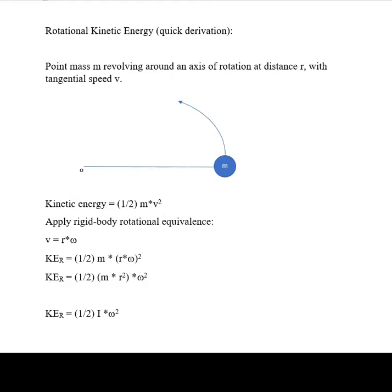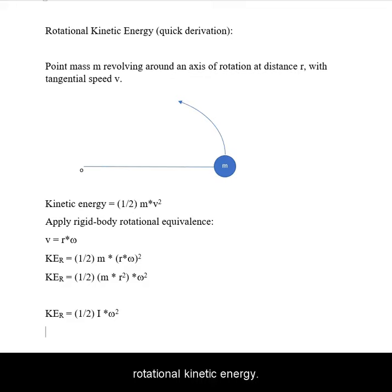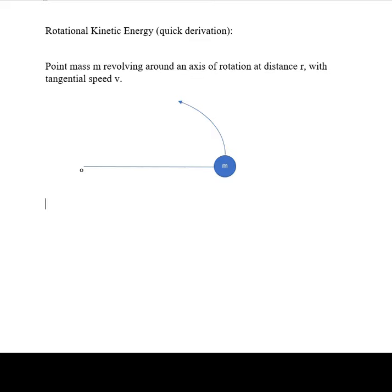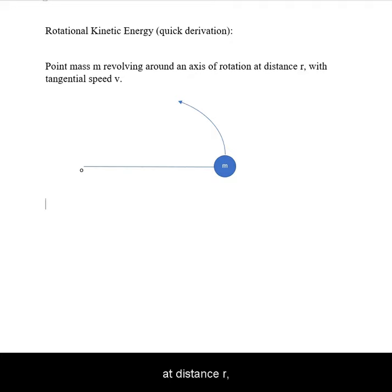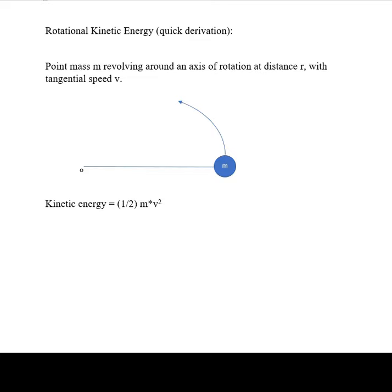This video will demonstrate the quick derivation for rotational kinetic energy. Take a point mass revolving around some axis of rotation at distance r with tangential speed v. The kinetic energy is one half mv squared.